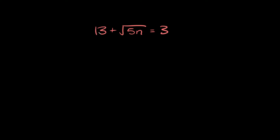The first thing we're going to do here is get rid of this 13 by subtracting 13 on both sides. Those cancel out, so we're just left with the square root of 5n is equal to 3 minus 13, which is equal to negative 10.